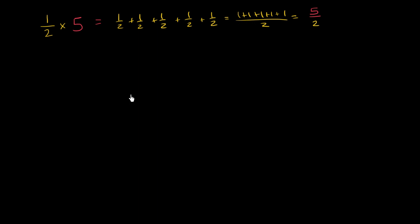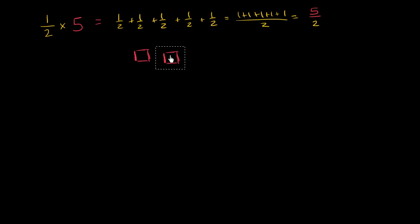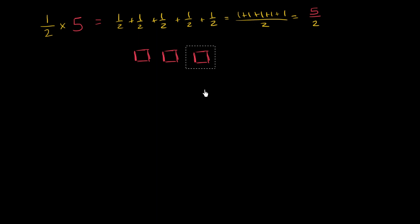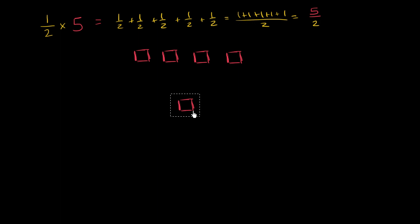The other way to think about this is that you start with five things. Let me copy and paste so they all look the same — so that's two things, three things, four things, and five things. So you start with five things and you take half of them. What would be half of this?